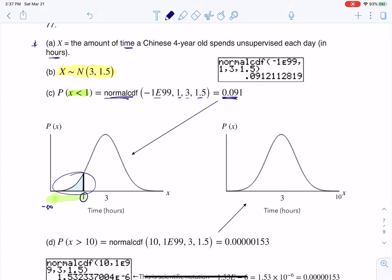Part D says what percent of children spend over 10 hours. If we start to think about over 10 hours, I have this graph here. I've got my x variable labeled, scaled, I've got the y-axis labeled, I've got 3 under the peak, but keep in mind our deviation was 1.5. So if we go 4.5, 6, 7.5, you can feel 10 is pretty far down that x-axis. You can see 10 is really far down there, right?